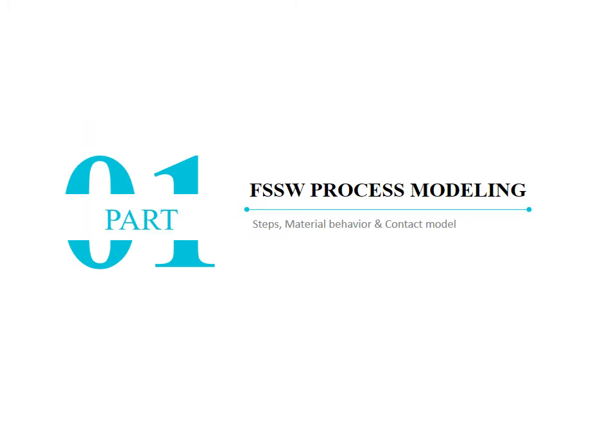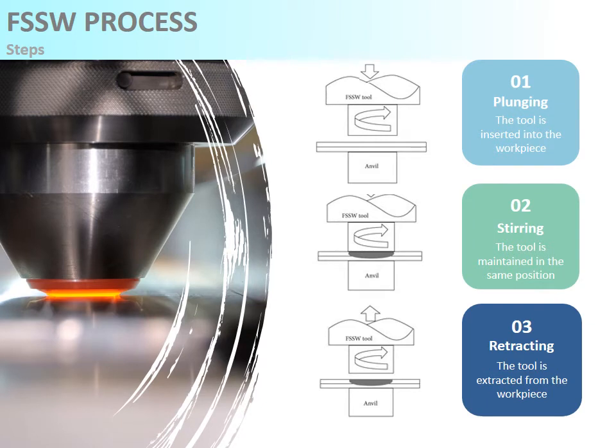Let's start by defining the friction stir spot welding finite element model. The process is divided into three steps: first, the plunging of a rotating tool into the workpiece to be welded; then, the rotating tool is maintained in the same position, creating frictional heat which softens the material, and the motion of the tool stirs the softened material, creating the spot weld; and finally, the tool is extracted.